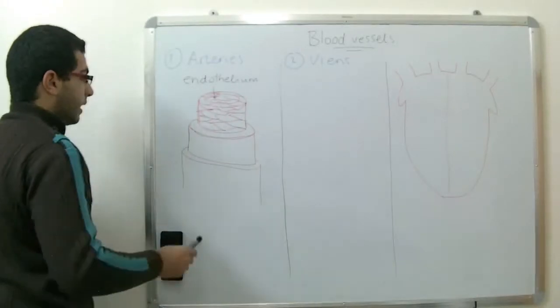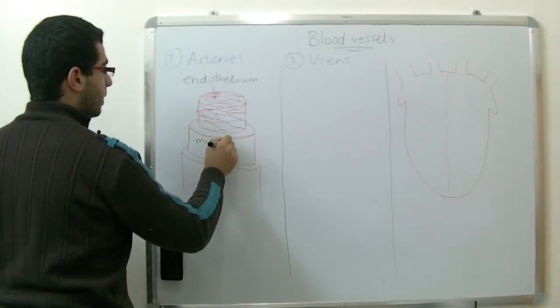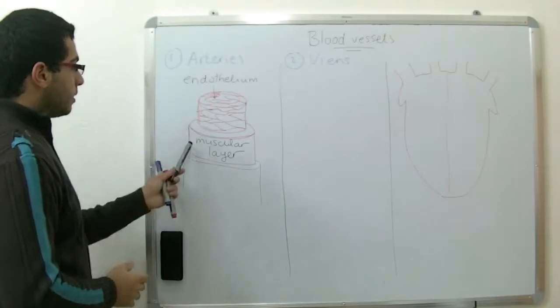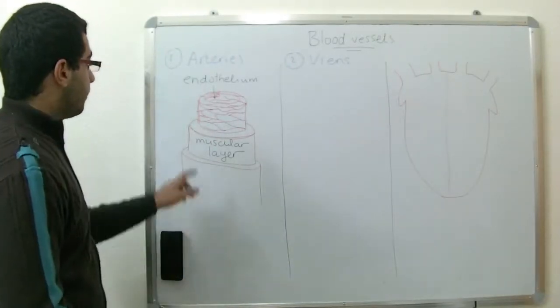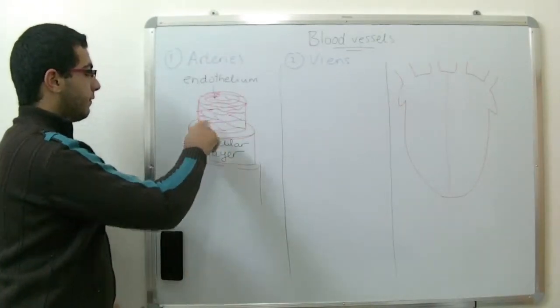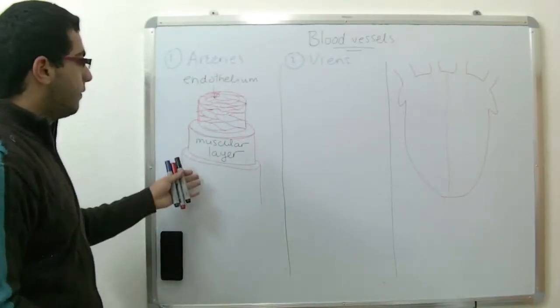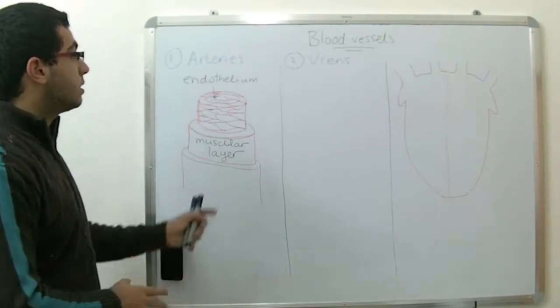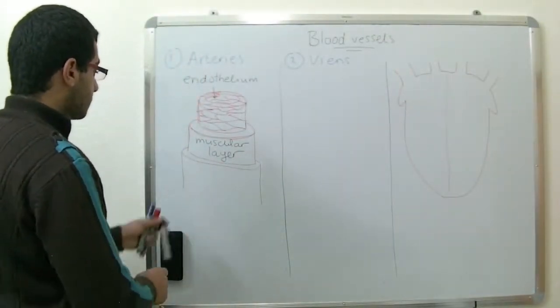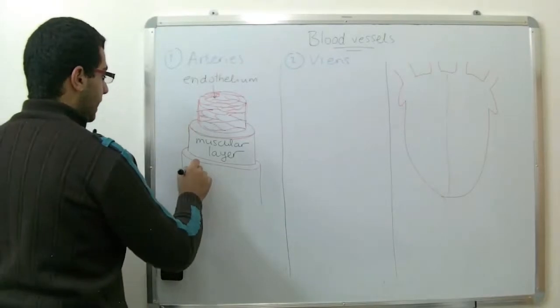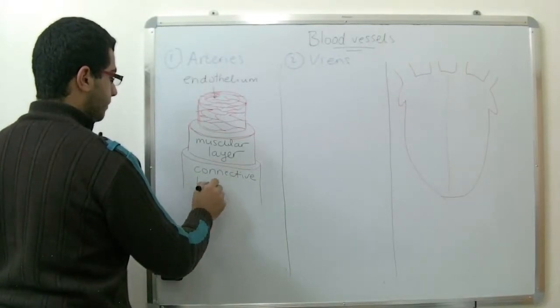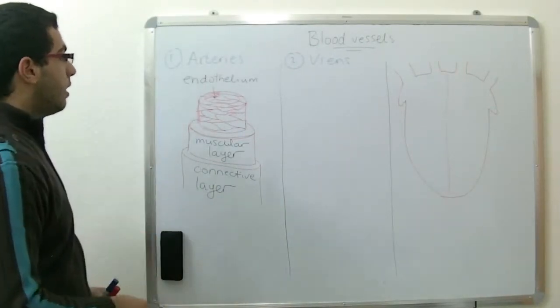The second layer is a muscular layer that controls the pulsation of the artery. So this muscular layer is a strong layer which is found in the artery to control the blood flow through it. And the arteries are blood vessels which carry the blood from the heart to the different organs of the body. The outer and last layer is a connective layer only for the protection of the artery.